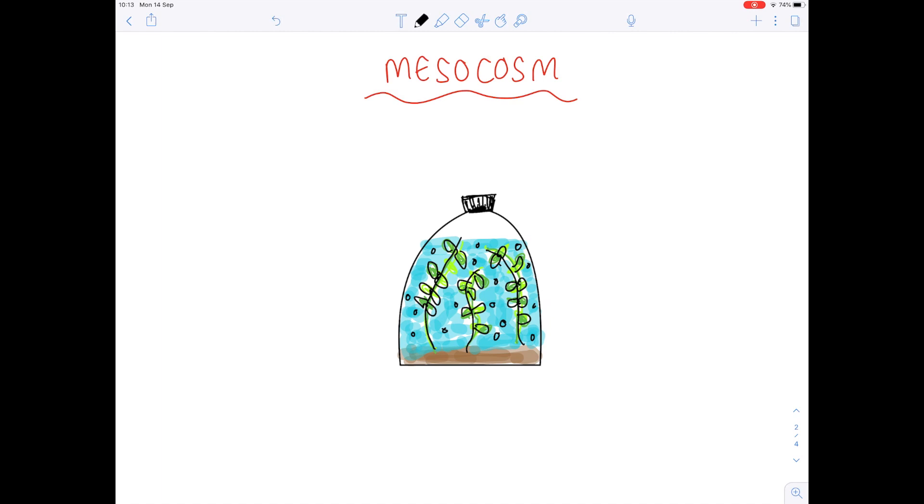So let me just label this flask so you can see what's going on. We have a bung at the top which prevents entry and exit of substances. So notice that these are sealed ecosystems. We have a 4 litre jar.